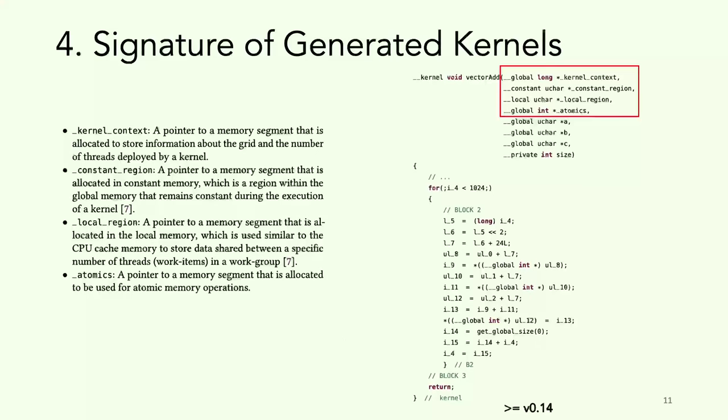The last part regards the signature of the generated kernels. This is from version 0.14 onwards. On the right side, we have the kernel of vector addition with eight parameters. The first four are TornadoVM specific parameters. The first one, the kernel context, is a pointer used to store information about the grid layout that will be deployed on the GPU and the number of threads.